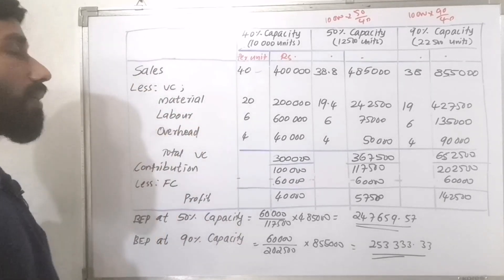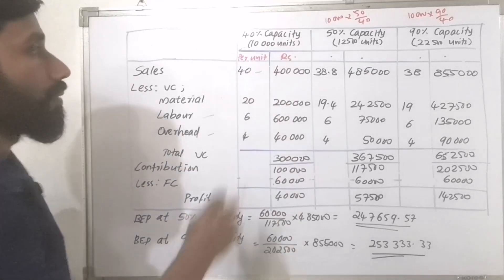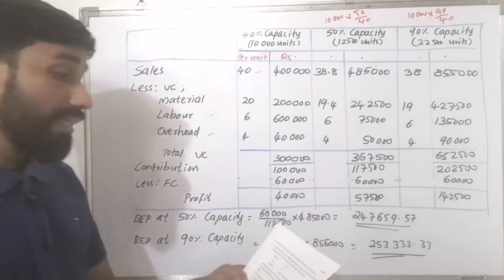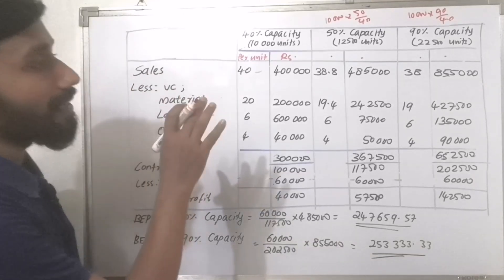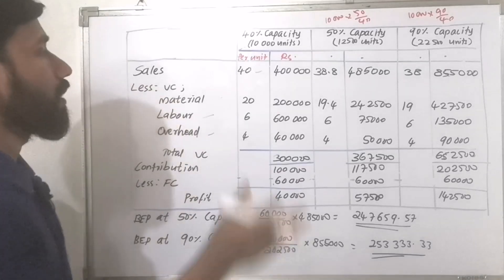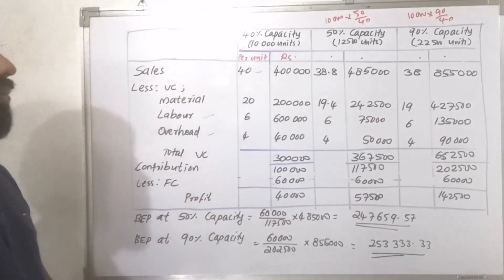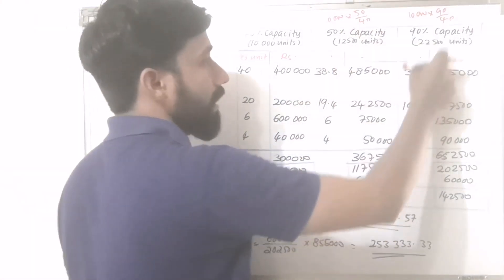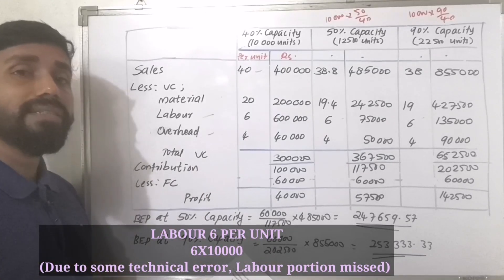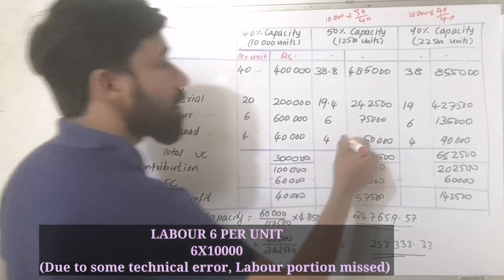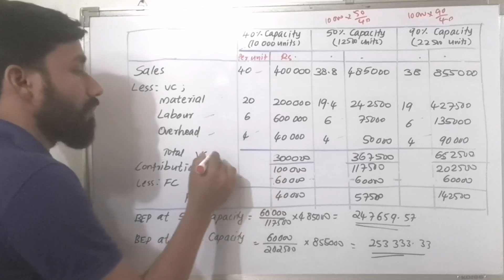We have to minus the variable cost. The variable cost includes material, labour, and overhead. Material is Rs. 20 per unit at 40% capacity. At 50% capacity, with the material price also falling, the material cost is Rs. 19.40 per unit, so 19.40 into 12,500. For 90% capacity, it is 19 into 22,500. Overhead is Rs. 10 per unit and 40% is variable, making variable overhead Rs. 4 per unit: 4 into 10,000, 4 into 12,500, and 4 into 22,500. So here we have total variable cost.